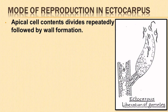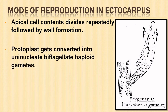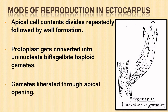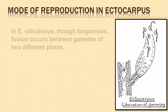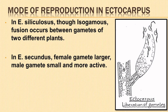The contents of the apical cells repeatedly divide by transverse and longitudinal divisions followed by wall formation. The protoplast of each cubical compartment gets converted into a single uninucleate biflagellate haploid gamete. These gametes are liberated through an apical opening. In Ectocarpus siliculosus the gametes are isogamous but fusion takes place between gametes of different plants. In Ectocarpus secundus the female gamete is bigger while the male gamete is small and more active.